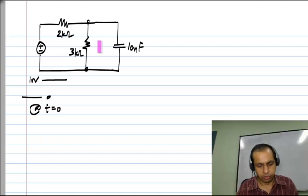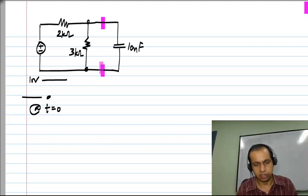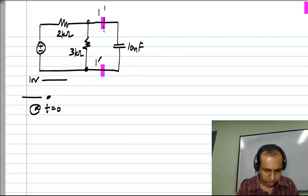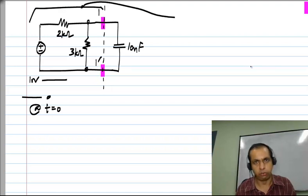Now, though we have two resistors, this can be effectively reduced to a single voltage source in series with a single resistor at the terminals of the capacitor using the familiar Thevenin equivalent. So if these are 1, 1 prime and whatever I have on this side, I change to Thevenin equivalent.